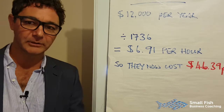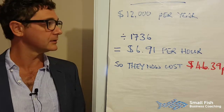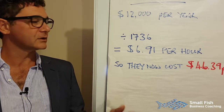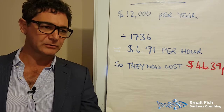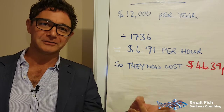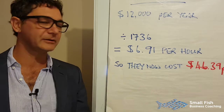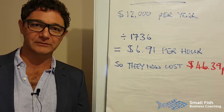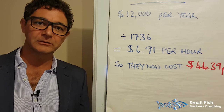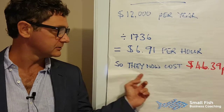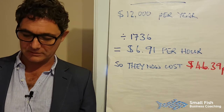Add a car. Most tradespeople need to be given a vehicle to properly do their work. Cars cost about $12,000 a year — think about the lease, the insurance, the rego, the tyres, the petrol, the maintenance. Divide that $12,000 by 1,736 and you need to add another $6.91 per hour. That brings the hourly rate you're paying them up to $46.39.